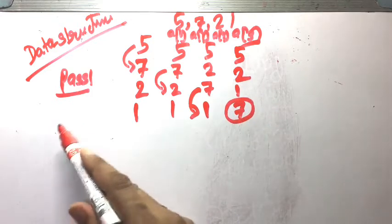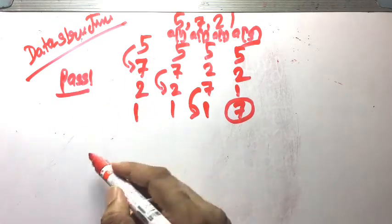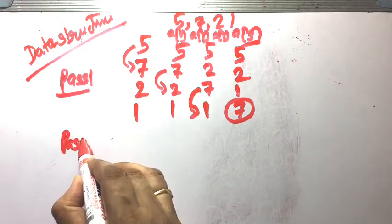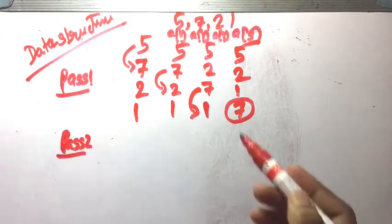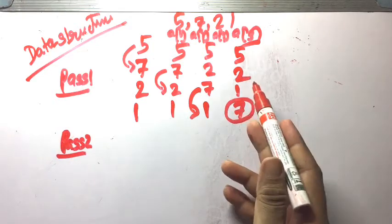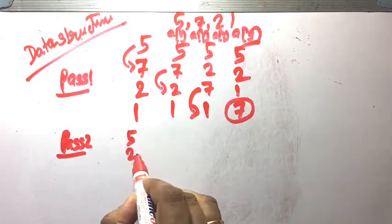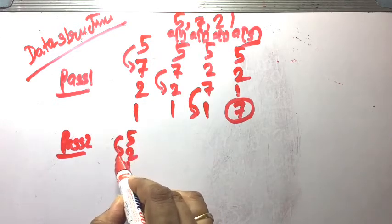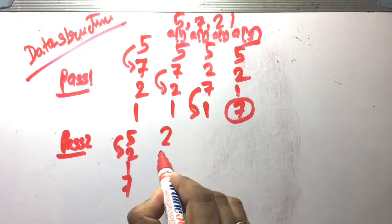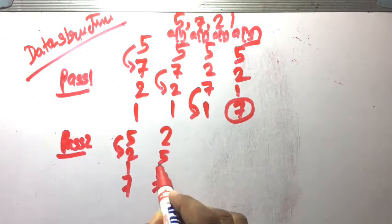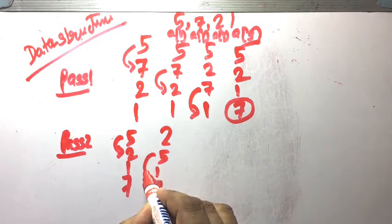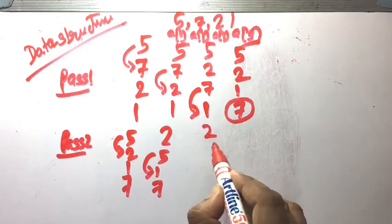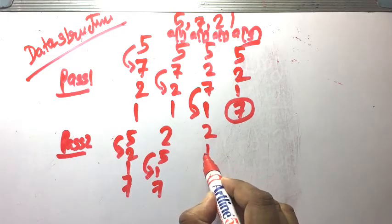So it is bubble sort pass 1. Now pass 2. In pass 2, the last element is already sorted. The numbers are now 5, 2, 1, 7. The other numbers can be compared and swapped.